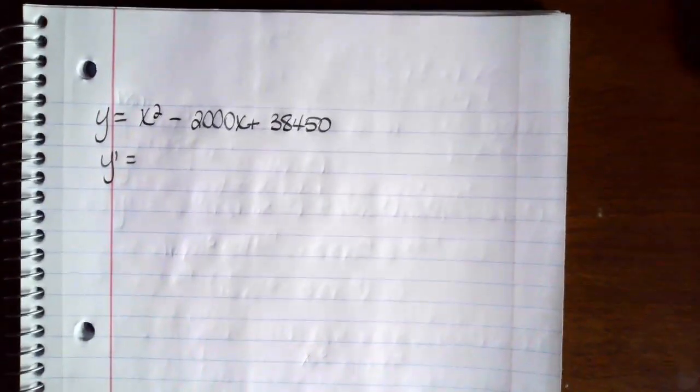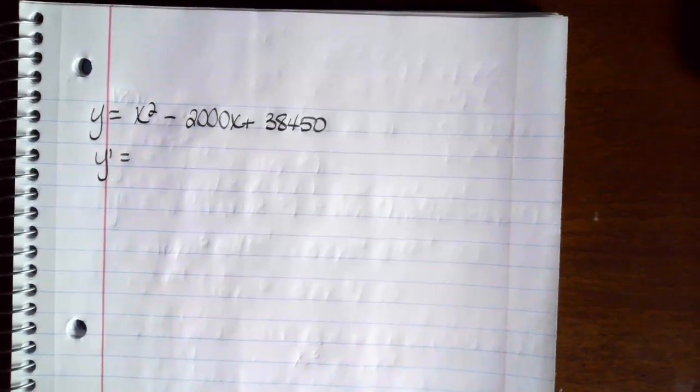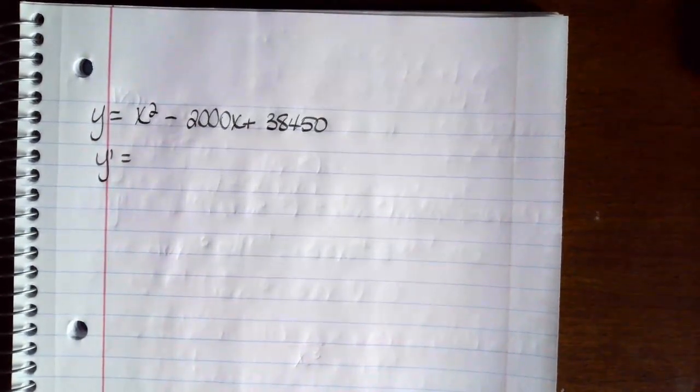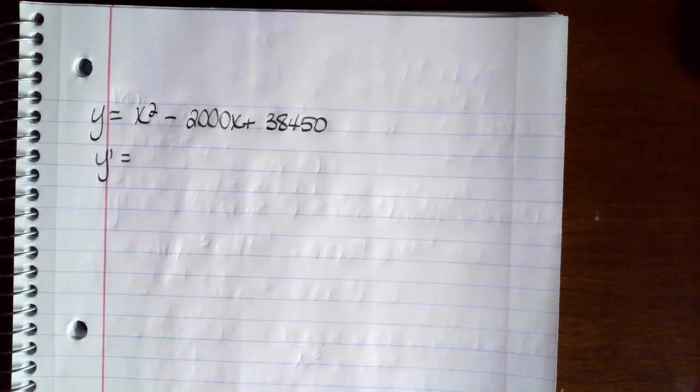Alright, we have, give me a second, this is blurry. There we go. x squared minus 2,000x plus 38,450. A company that produces cell phones has a cost function that I just read to you, where c is the cost in dollars and x is the number of cell phones produced in thousands.